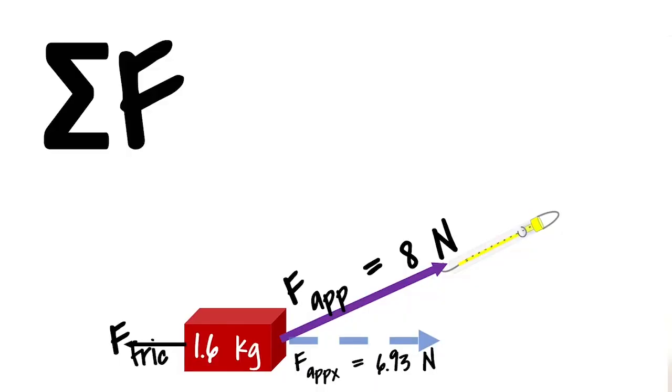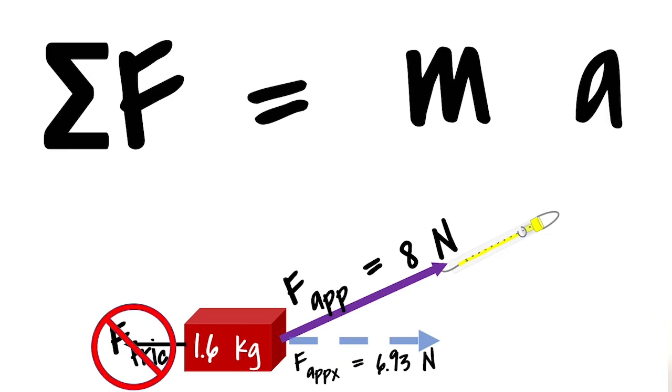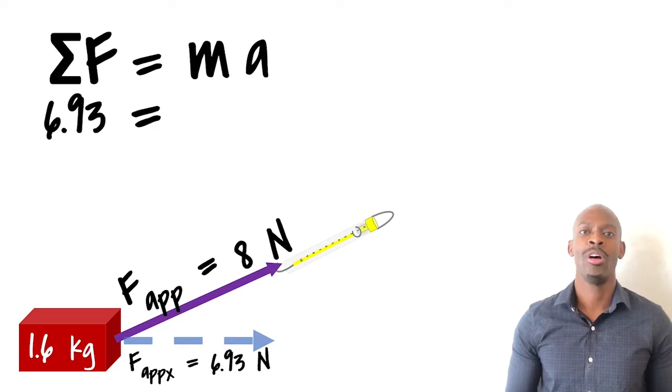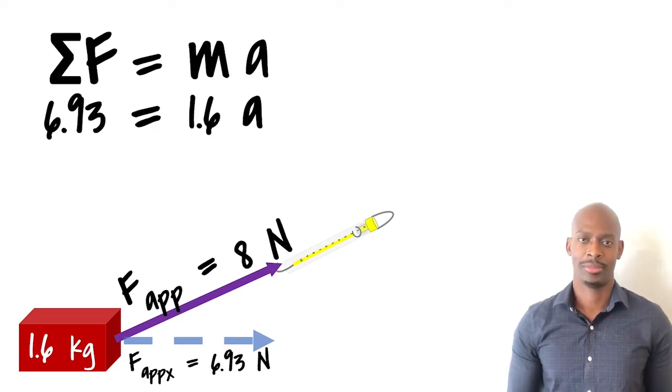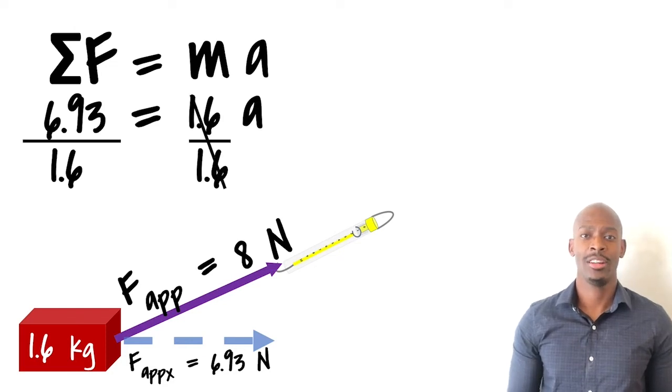So let's figure out the acceleration. We know that Newton's second law tells us the net force is equal to mass times acceleration. Since there's nothing else acting on the x-axis of this brick, there's no friction. This would simply be the x-component of the force is equal to the mass times the acceleration. We divide our mass on both sides, and we get our acceleration.